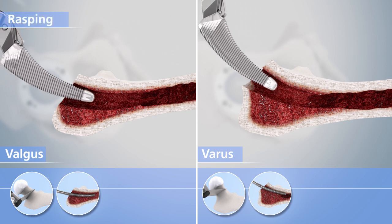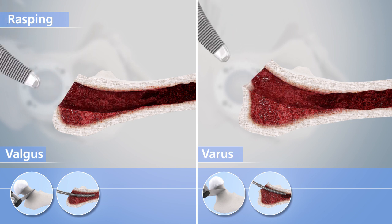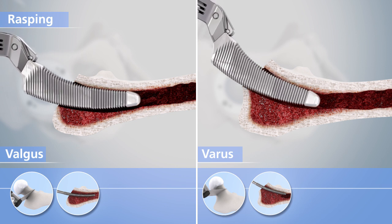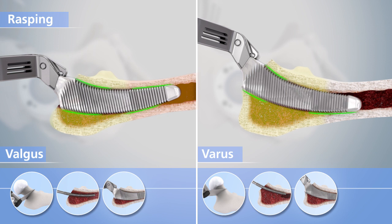Preparation of the implant bed begins with the so-called starting rasp in accordance with the entry planes described above. While rasping with slight lateral pressure is allowed already here in valgus anatomies, in varus hips this is to be avoided. Here, the preparation uses the so-called around-the-corner technique. Preparation using ascending rasp sizes is carried out until reliable press fit and rotational stability of the rasp can be achieved and no further advancement into the femur by hammer strokes is possible. While, in addition to metaphysial anchoring, fit and fill in the proximal diaphysis is desired in valgus hips, in varus anatomies the goal is to achieve metaphysial anchoring with three-point support.